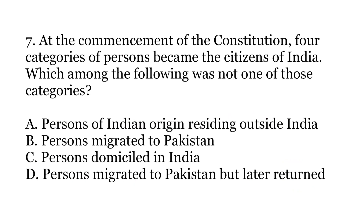Seventh question is: at the commencement of the constitution, four categories of persons became citizens of India. Which among the following was not one of those categories? The options are A. Persons of Indian origin residing outside India, B. Persons who migrated to Pakistan, C. Persons domiciled in India, and D. Persons who migrated to Pakistan but later returned.